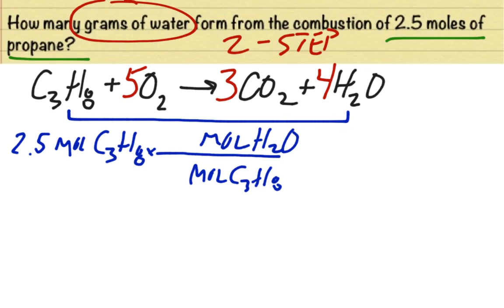Now, again, the numbers that go with this fraction, with this conversion factor, are generated from our balanced chemical equation. And in the balanced chemical equation, we have that water is a 4 and propane is a 1.